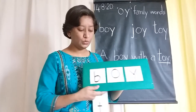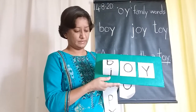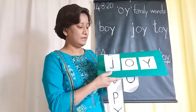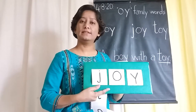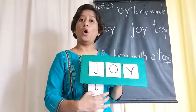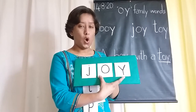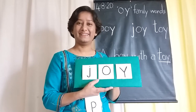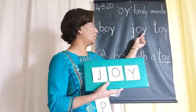Okay, let's make another new word. This time I'm going to add letter J. J says J. O says AW, Y says Y. OI — JOY. Joy means happiness. Aren't you happy today? That's the second word. J-O-Y, JOY.